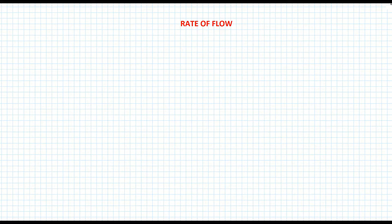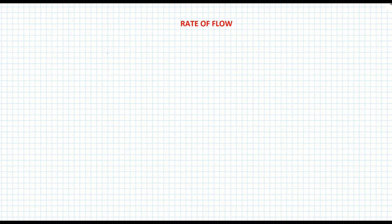We'll be looking at problems which involve liquids, such as water flowing from one object — maybe a cylindrical pipe — into another object, which could be a rectangular shaped object. We're looking at the rate of flow, which is basically examining the quantity of water passing through that object per second. That'll make a bit more sense with a sketch.